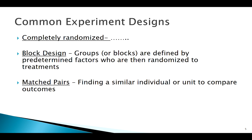Another very common design is matched pairs, where you take two very similar individuals and put one in the treatment group and one in the control group, then compare outcomes. It's often hard to find very similar people, but twin studies are a natural solution since they control for genetic factors. A well-known example is when an astronaut was sent to space for a year and compared to his twin when he returned, to see how space had affected him.